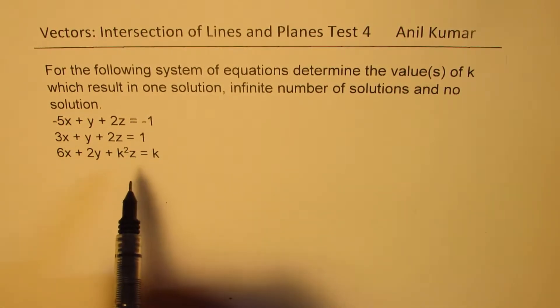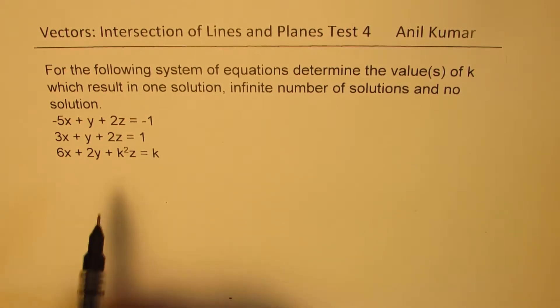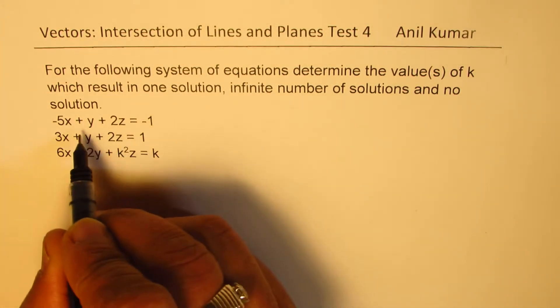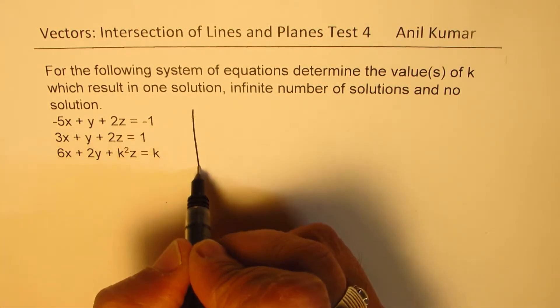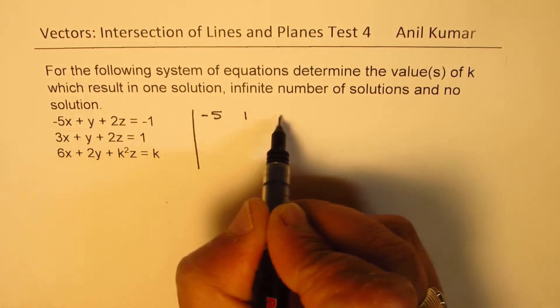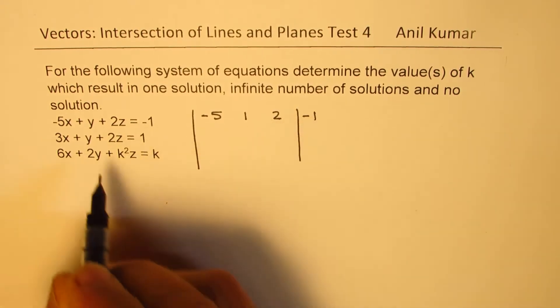So let's use the augmented matrix, row-echelon method to solve and find the value of k. Writing this as an augmented determinant, we get this as minus 5, 1, 2, and that is minus 1 for us.